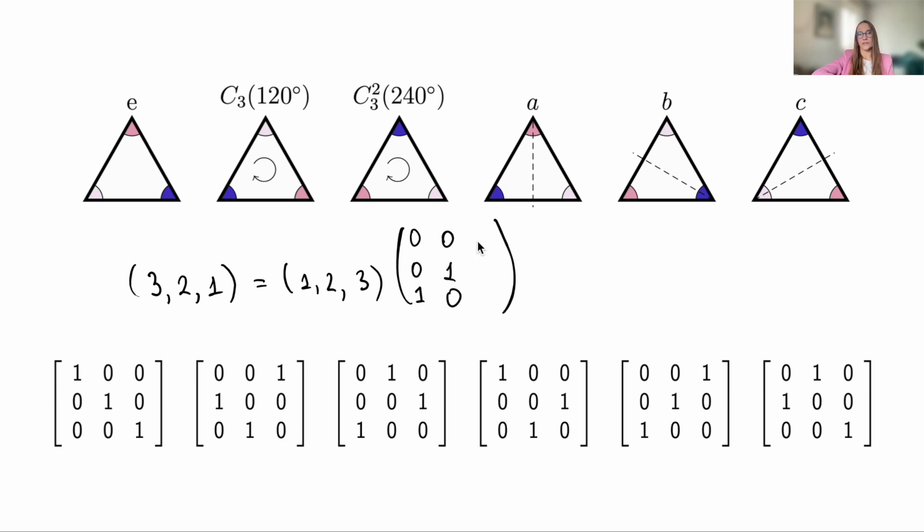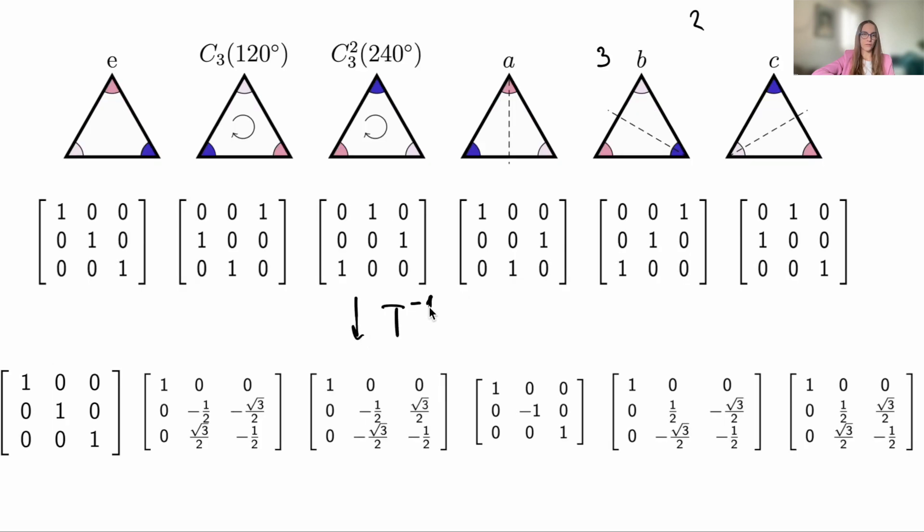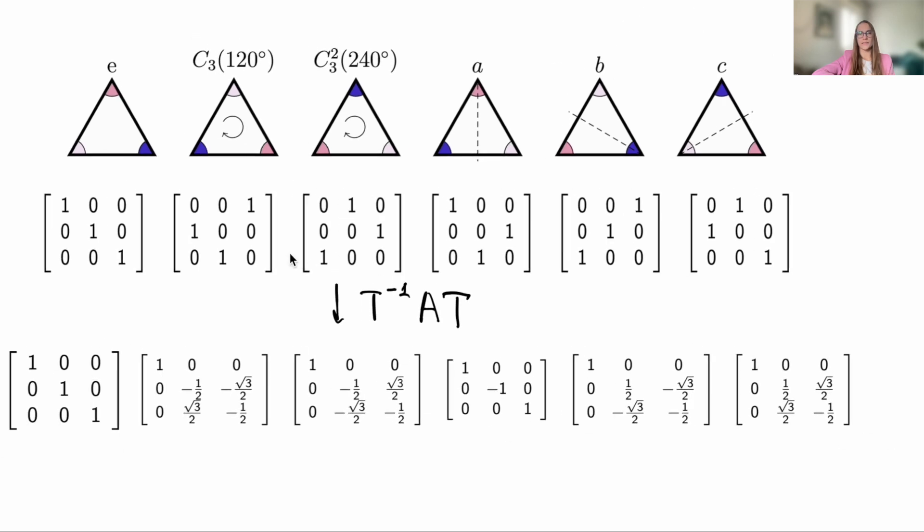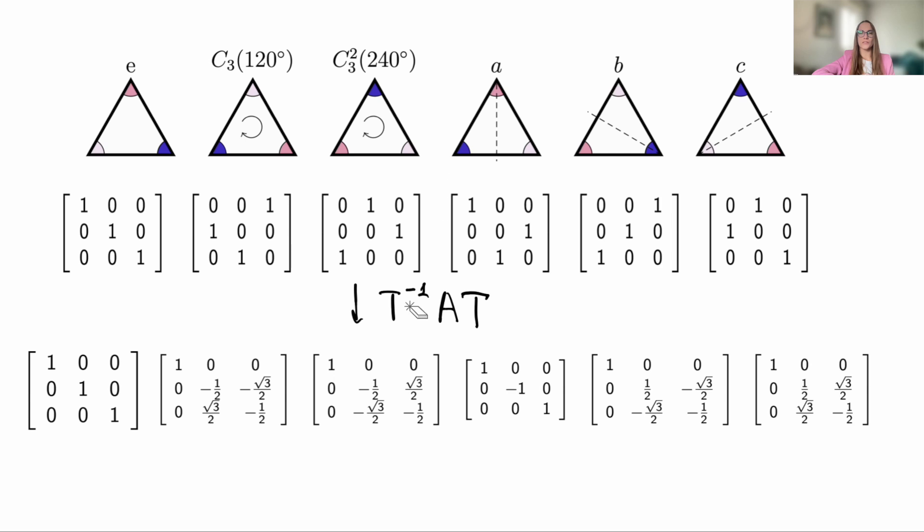At first, it looks very different from the matrices we discussed earlier. But we can find a single change of basis that simultaneously brings all six of these matrices into a new form, a block diagonal form, where the blocks include the rotation matrix we have already seen, along with the matrix filled entirely with ones, which we have also already seen. Again, matrix T is the same for all six elements.